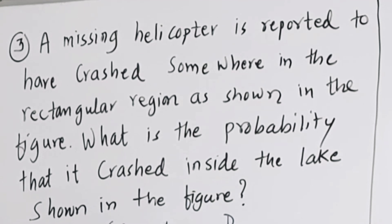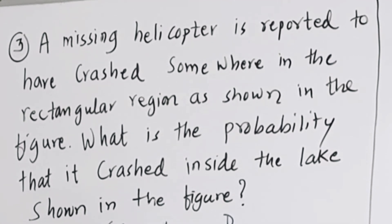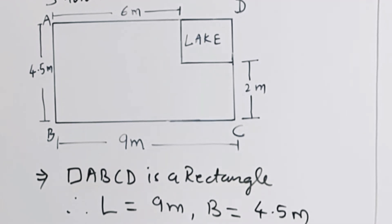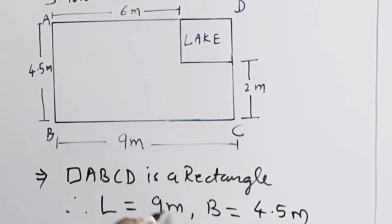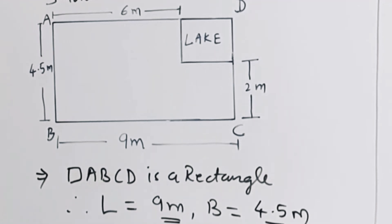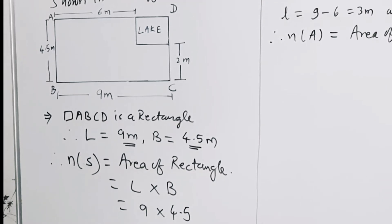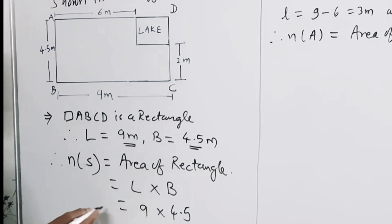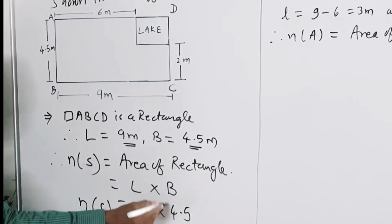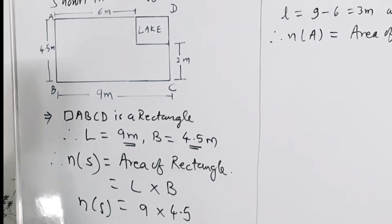A missing helicopter is reported to have crashed somewhere in a rectangular region as shown in the figure. What is the probability that it will crash inside the lake? Let us consider rectangle ABCD, where the length of the rectangle is 9 meters and the breadth is 4.5 meters. The sample space is the area of the rectangle, so Ns equals length into breadth, which is 9 into 4.5.